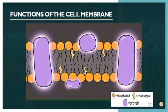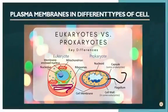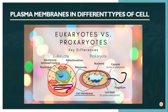The cell membrane also provides some structural support for a cell, and there are different types of plasma membranes in different types of cells. In general, the plasma membrane contains a lot of cholesterol as its lipid component, which is different from certain other membranes found within the cell.